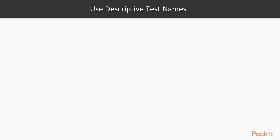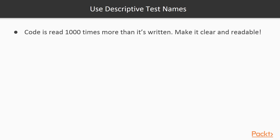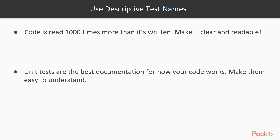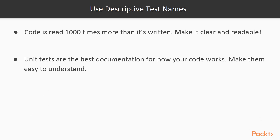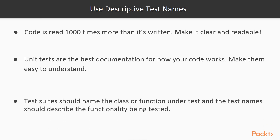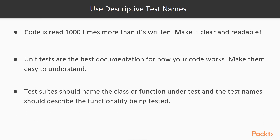Always use descriptive test names. The code is read thousands of times more than it's written as the years go by. Making the code clear and understandable should be the top priority. Unit tests are the best documentation for the developers that come after you for how you intended your code to work. If they can't understand what the unit test is testing, that documentation value is lost. Test suites should name the class or function that is under test, and the test name should describe the functionality that is being tested.